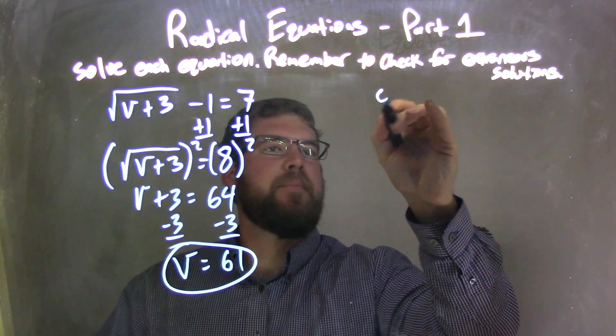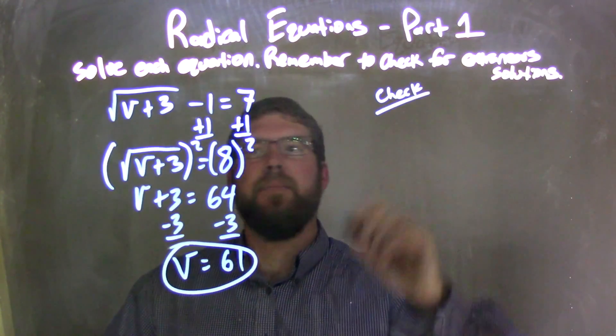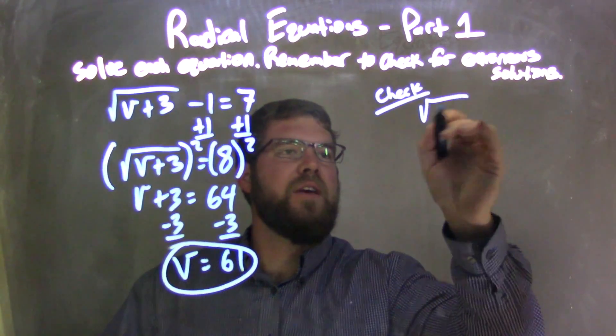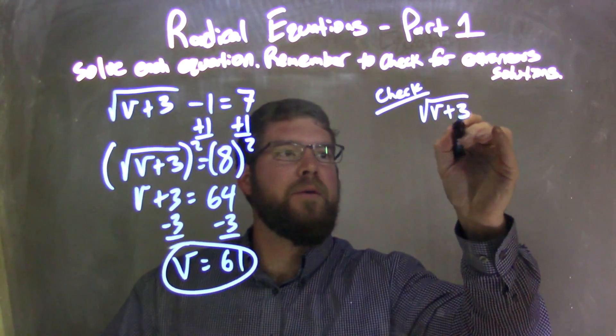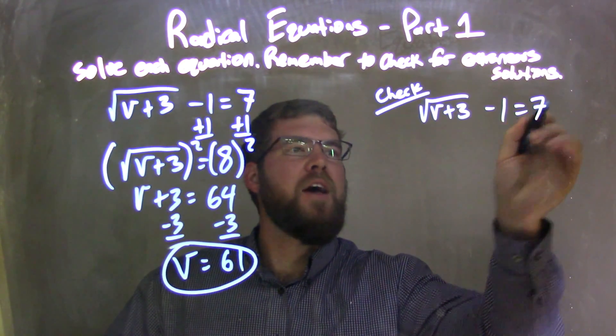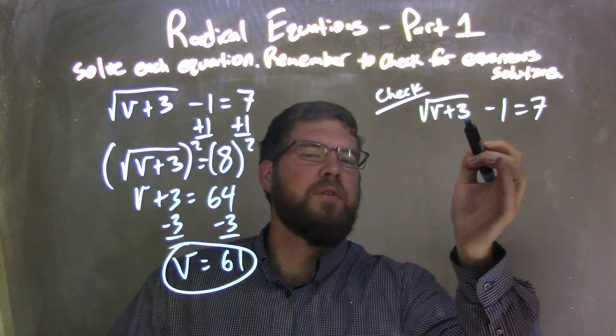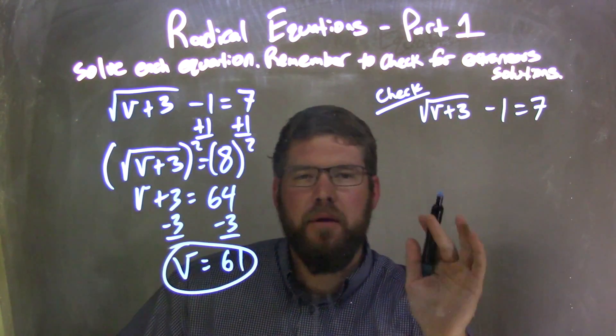Now I need to check. Don't forget that step. I need to check this. The square root of v plus 3 minus 1 equals 7. Be careful. The square root goes over to the 3, but not the minus 1. Attention to detail here.